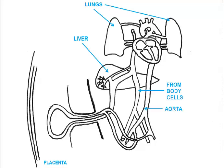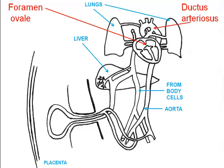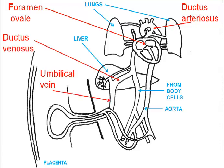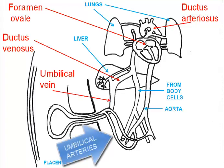There are four major modifications in fetal circulation. One is the foramen ovale, a hole in the septum between the right and left atrium. The ductus arteriosus, a connection between the pulmonary arteries and the aorta. The ductus venosus, which we'll discuss in a moment. And of course the umbilical vein and the umbilical arteries.